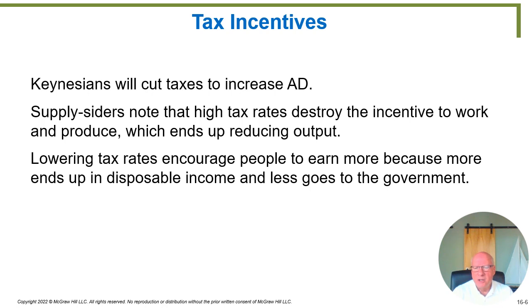Now let's talk about tax incentives. Many people — especially supply-side economists interested in shifting the aggregate supply curve — talk about tax incentives. Keynesians want to cut taxes as well, but their main goal is to change aggregate demand: if the government cuts taxes, you have more disposable income, you spend some of it, and total demand increases. But this chapter is on supply-side, so we'll spend most of our time on what other reason you could have for modifying taxes — can you also shift the aggregate supply curve?